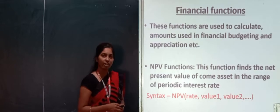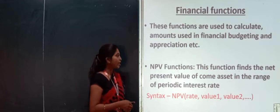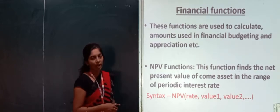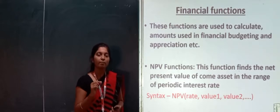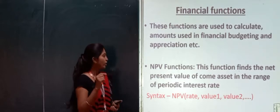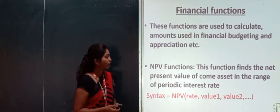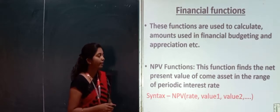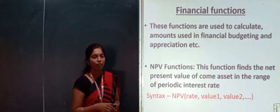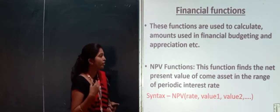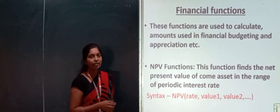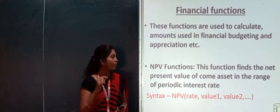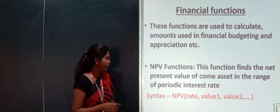The first financial function is NPV — net present value. This function finds the net present value of assets in the range of a periodic interest rate. The syntax is: =NPV(rate, value1, value2).